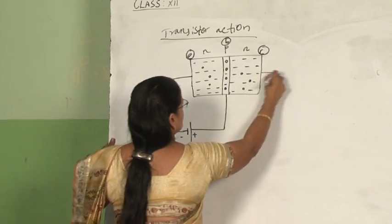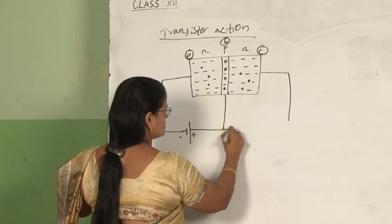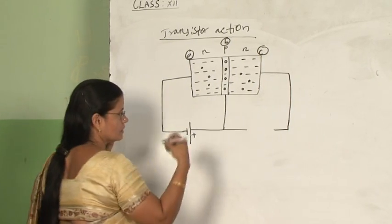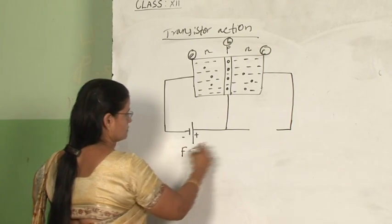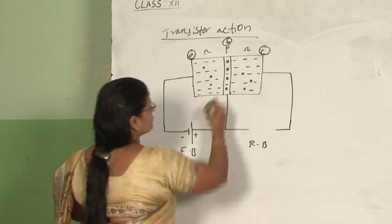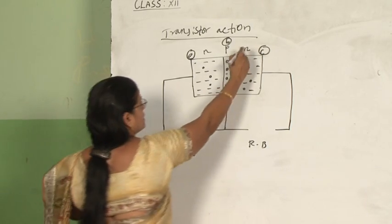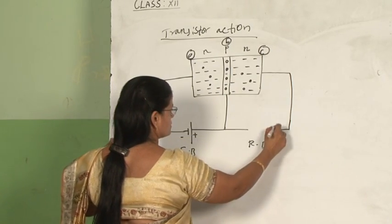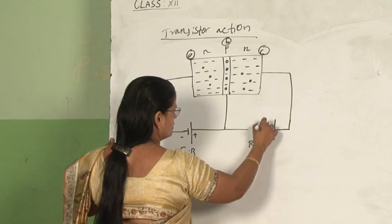In the collector section, it has to be always reverse biased. If you see in the collector section, we have n-type semiconducting material; therefore, reverse biased means we have to connect the positive terminal here.